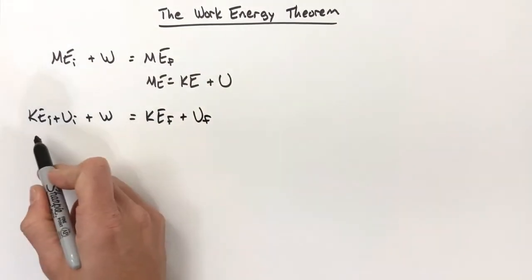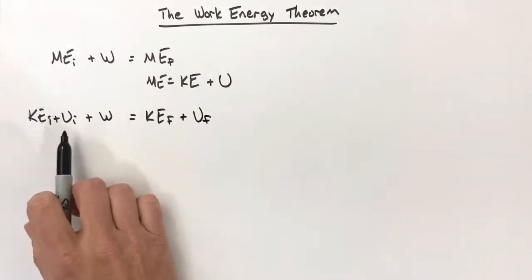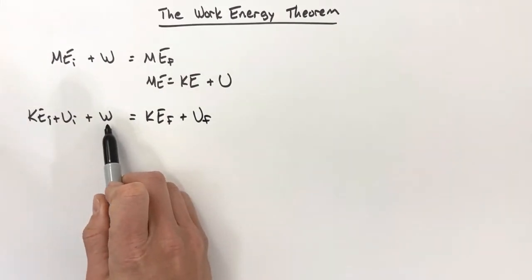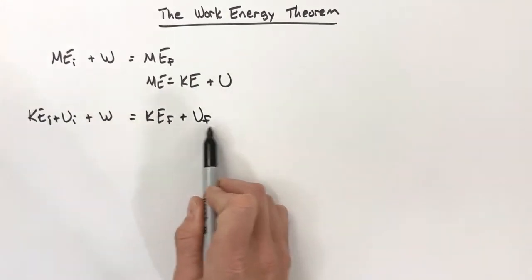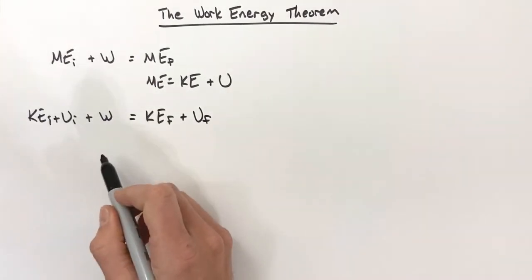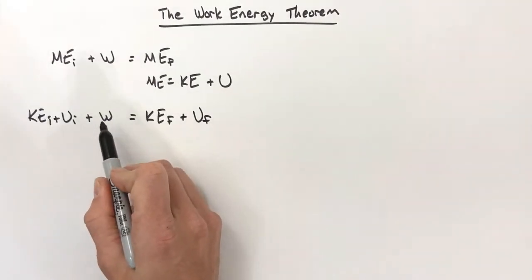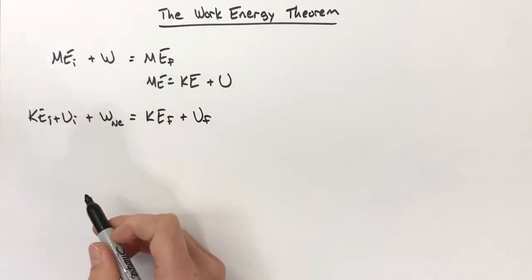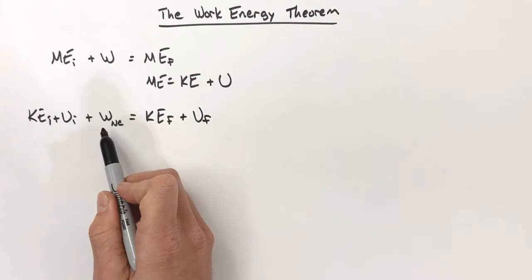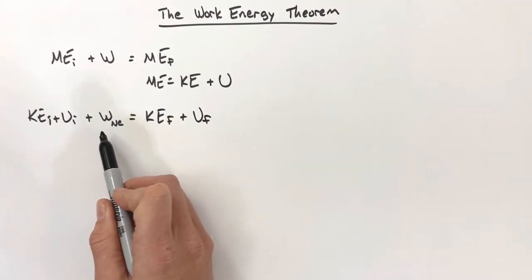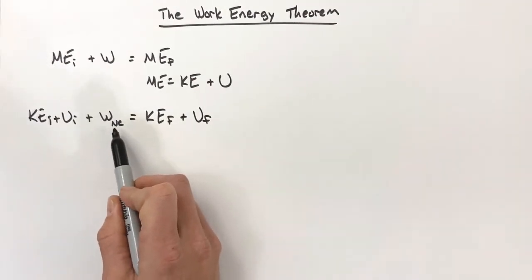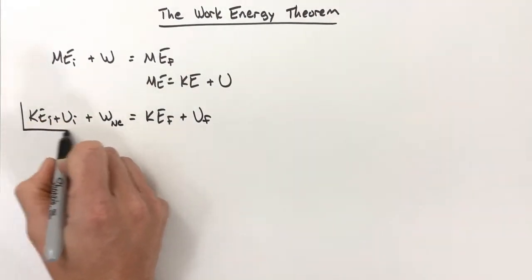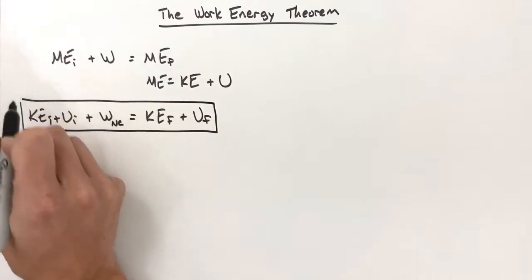We have our initial mechanical energy plus our change in energy of the system, which equals our final mechanical energy. One important thing to point out: the work term here is what we call non-conservative work. There is conservative work and non-conservative work — I'll get to what those are in a minute. This equation appears in just about any physics text dealing with mechanics.